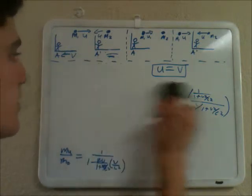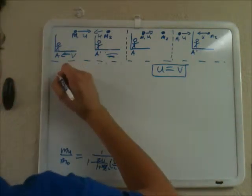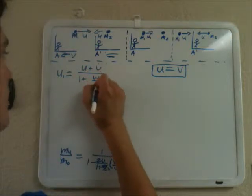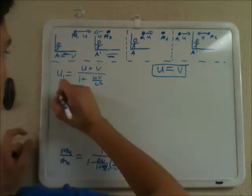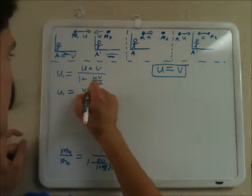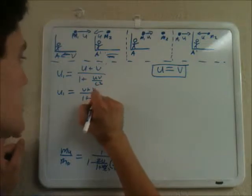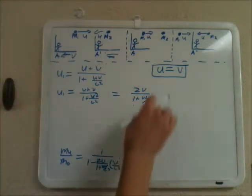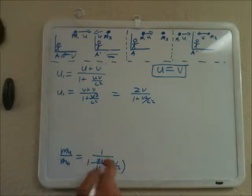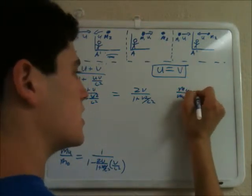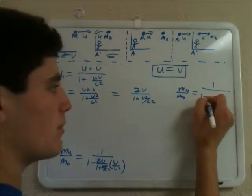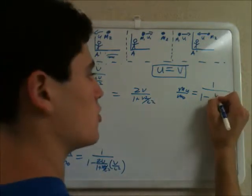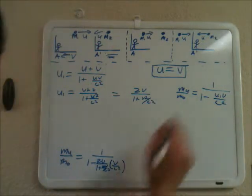Now let's look at another equation. We have u1 equals u plus v over 1 plus uv over c squared. We know that u equals v, so we can replace the u's with v. So we get u1 equals v plus v over 1 plus v squared over c squared, which equals 2v over 1 plus v squared over c squared. We have this value equals u1, and we have that same value in our expression, so we can replace it and say that mu over m0 equals 1 over 1 minus u1 times v over c squared.